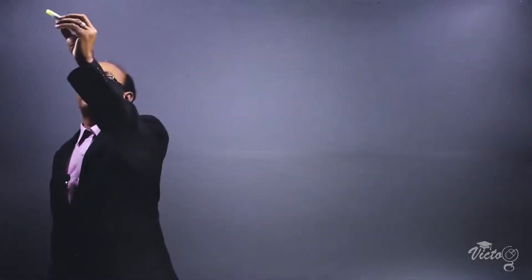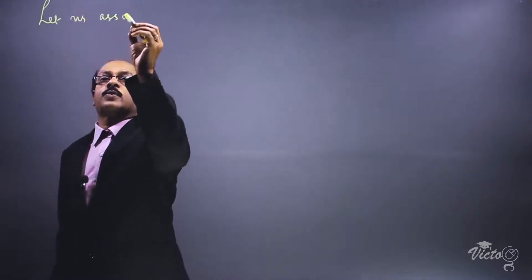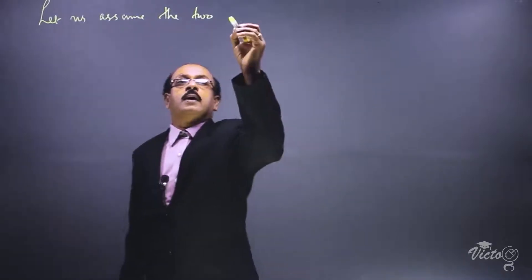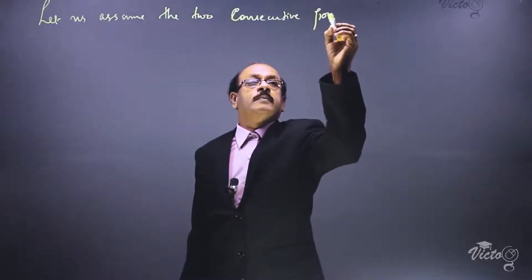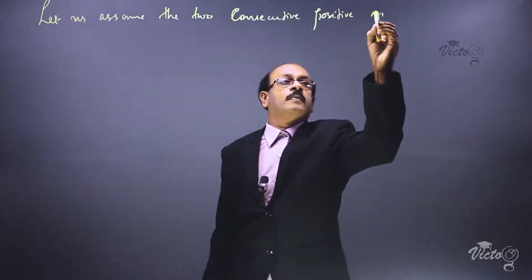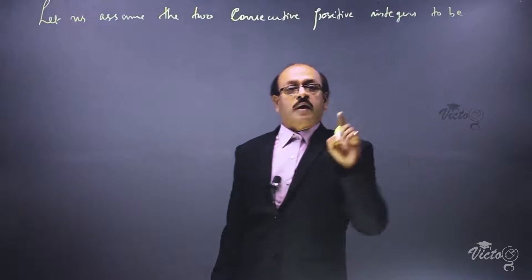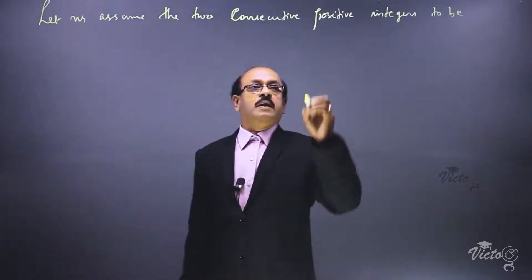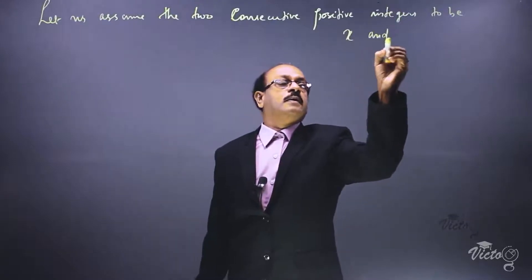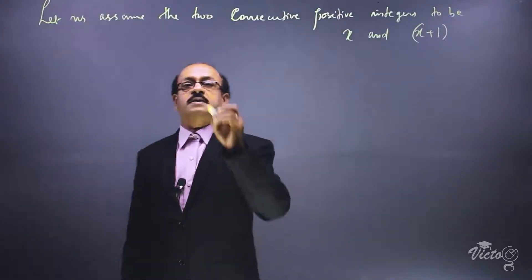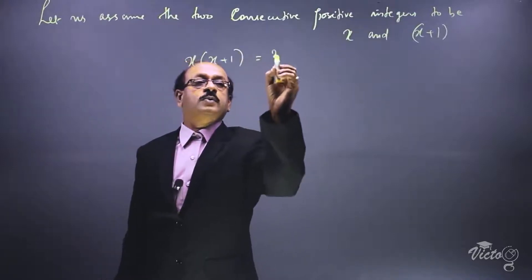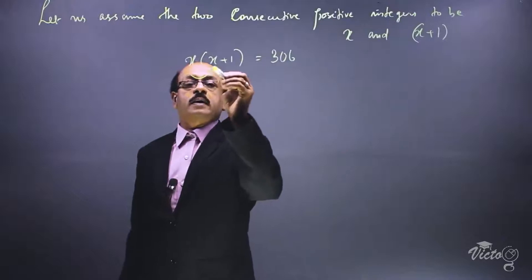Let us assume the two consecutive positive integers to be x and x plus 1. If one number is x, the next number should be x plus 1. The product of these two numbers is given as 306, so x into x plus 1 is equal to 306.